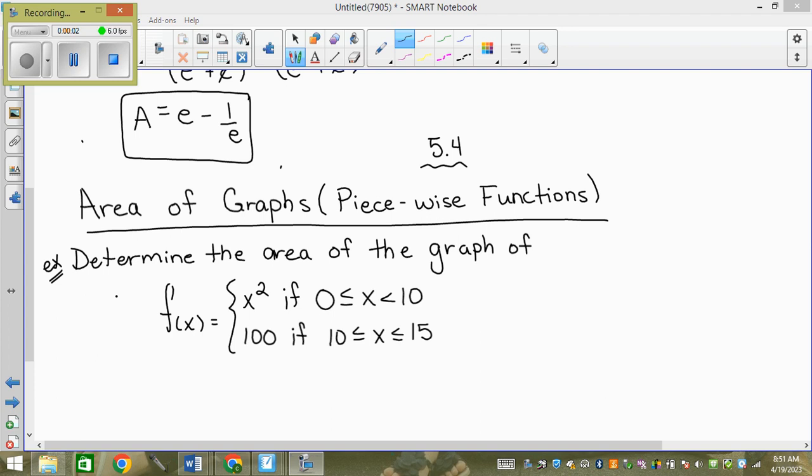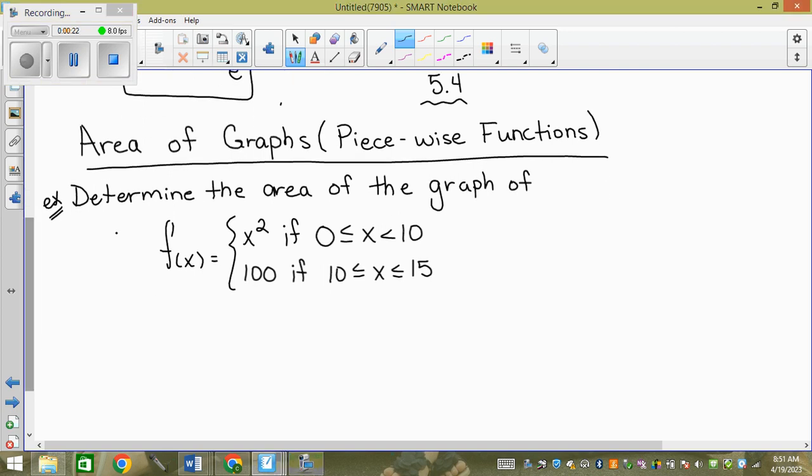If I did the x squared, it would be the integral from 0 to 10 of x squared dx. If I did this, we'd go the integral from 10 to 15 of 100 dx. So I get two areas, don't know what I do to them. Literally, that's all this is. When we set the area up for this, we're going to go from 0 to 10 x squared dx plus 10 to 15, 100 dx.